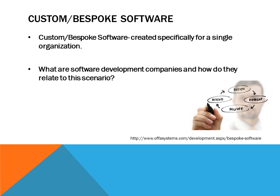Next is custom or bespoke software — they're both the same thing, just a different way to say it. Custom and bespoke software are created specifically for a single organization, meaning it's specialized for one specific organization or company to be used by them and only them. This allows them individuality and makes it easier to interact with, since it's specific to their needs. Software development companies develop this custom software for organizations. However, larger companies often have personal software developers on site who create the software used by the organization.